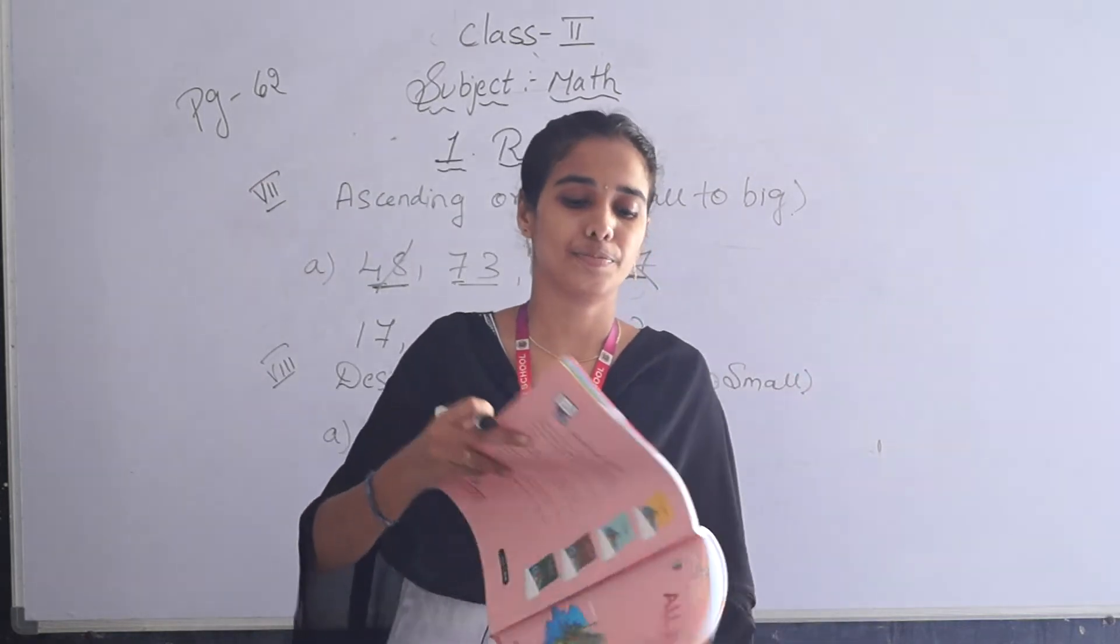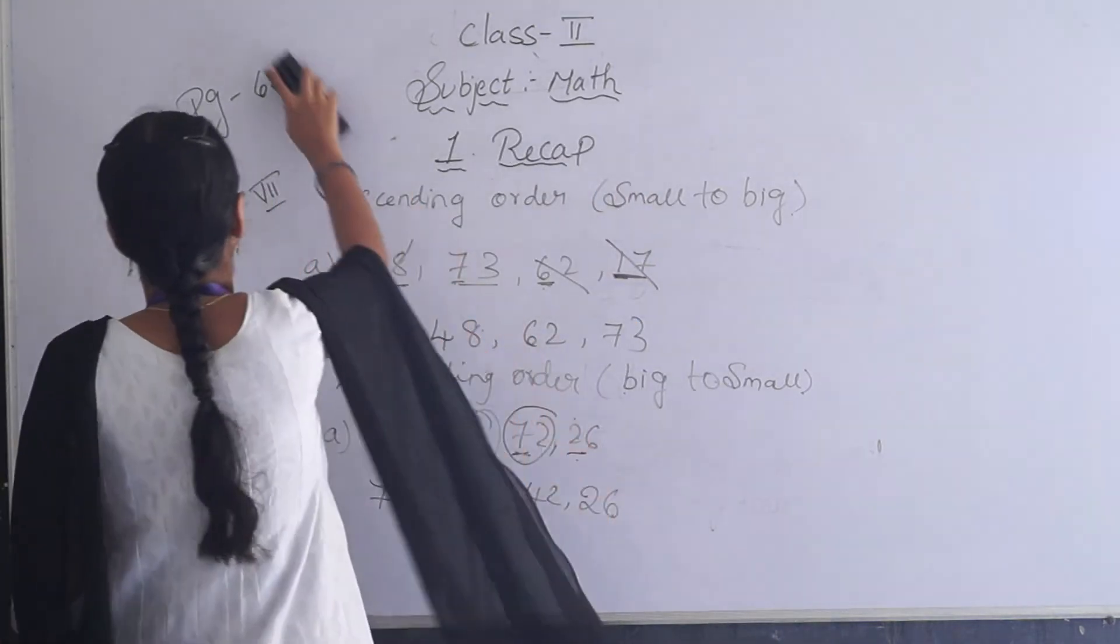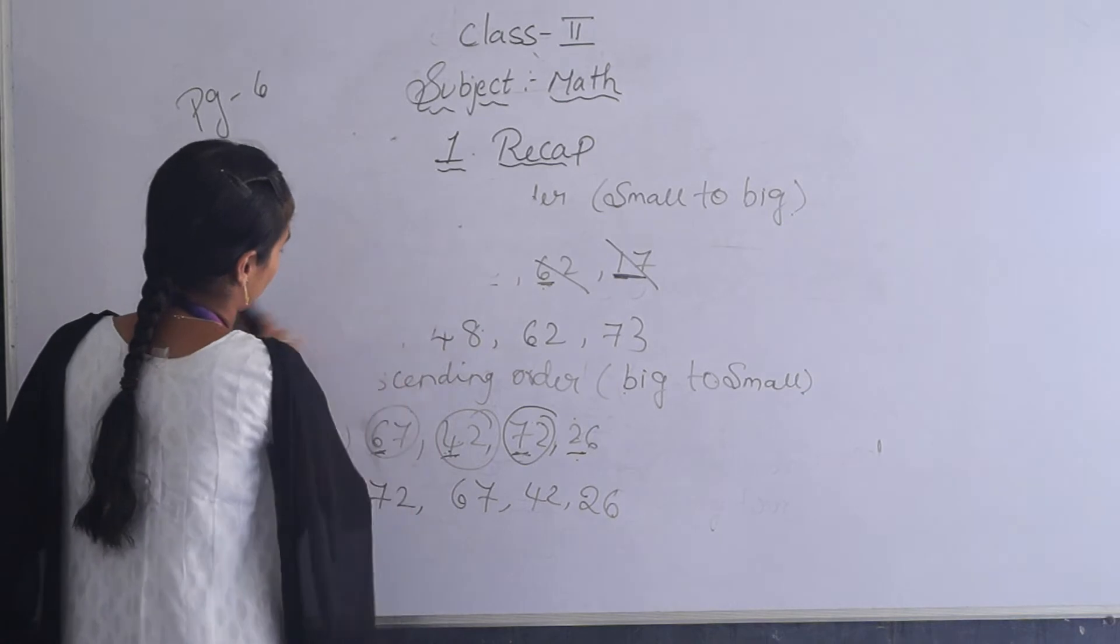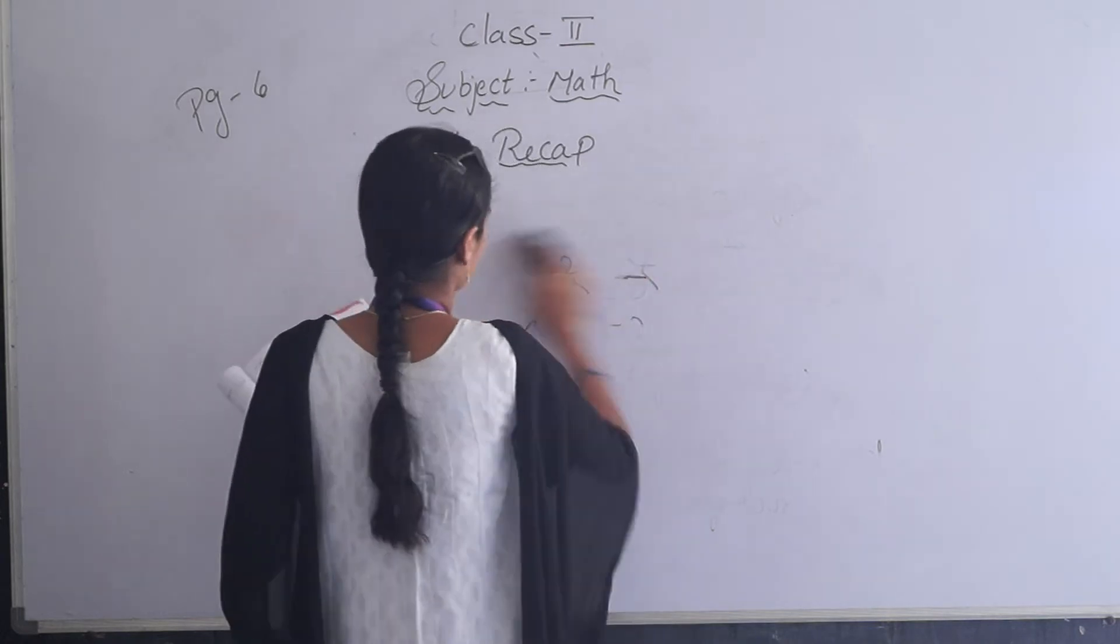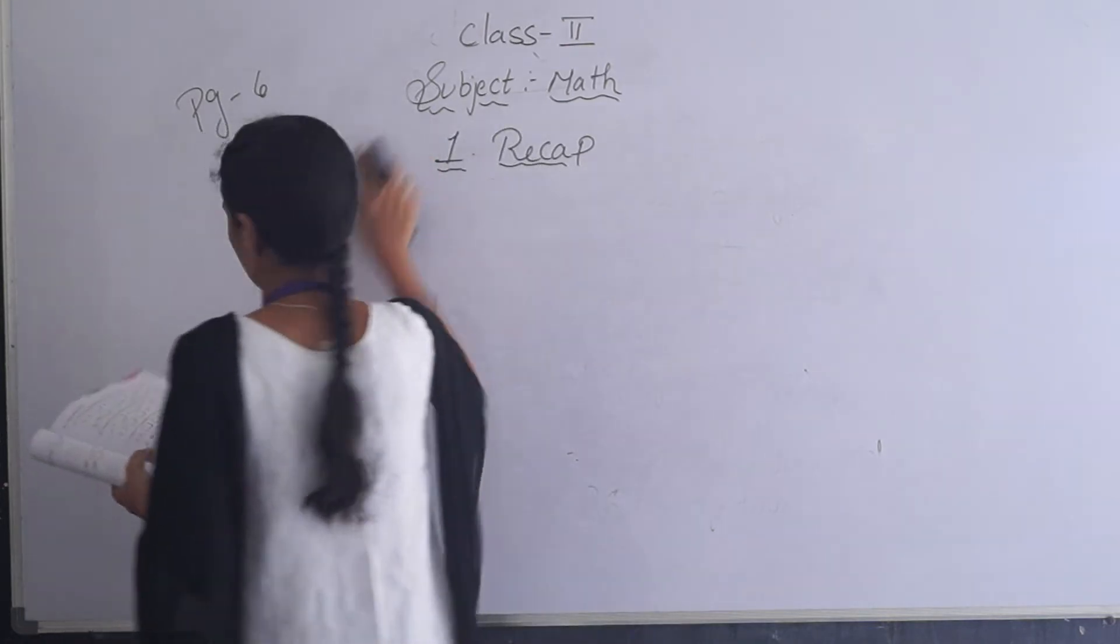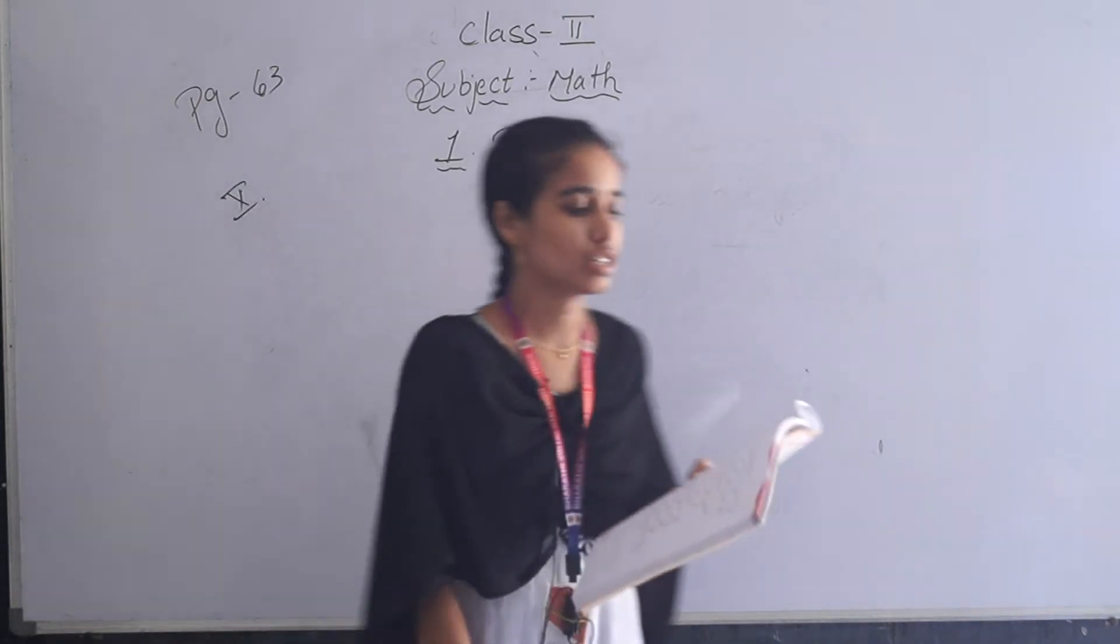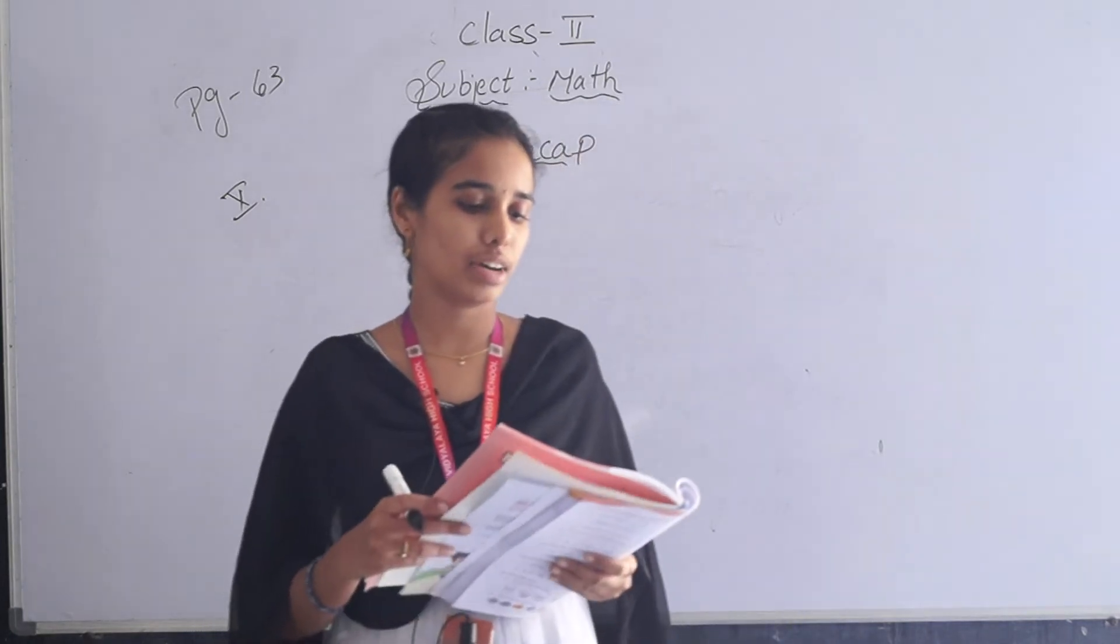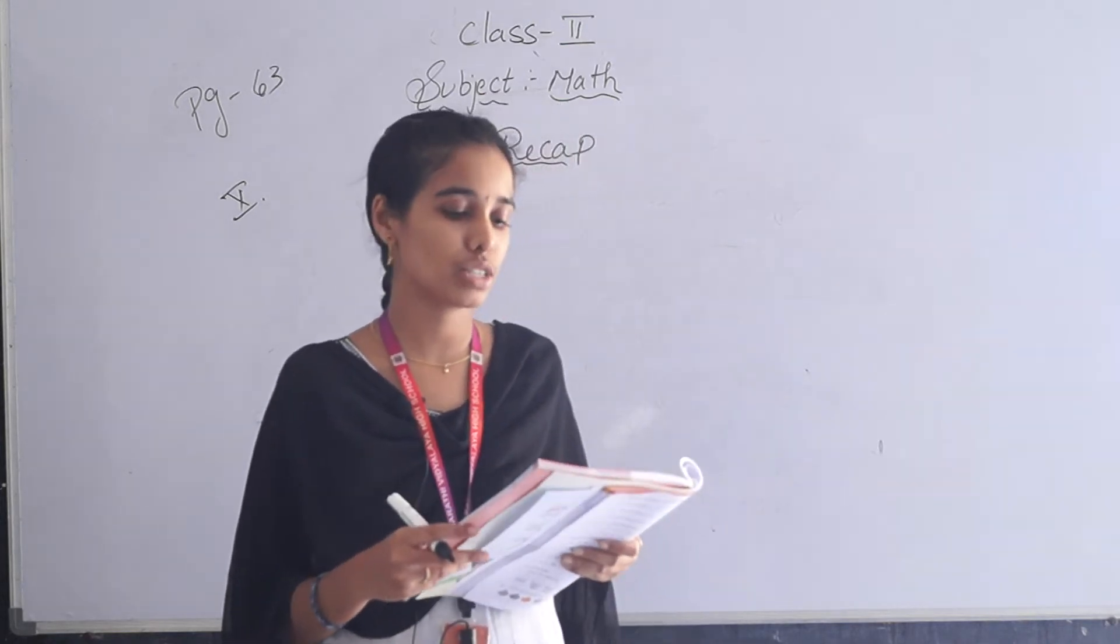Next, last bit, that is 10th bit. Page number 63. That is 10th bit. Do as directed. In this bit we have 4 bits: A, B, C, D. I am telling A1. Count in 2s and fill in the missing numbers. They gave some missing numbers you have to fill.